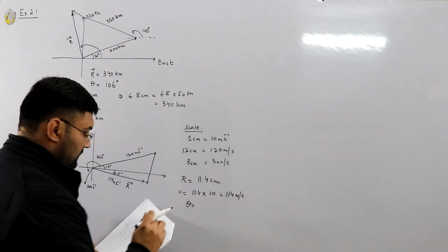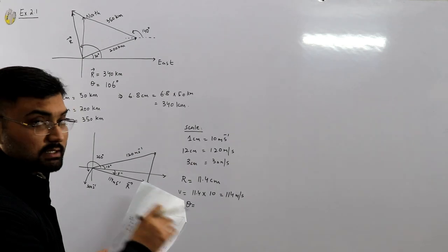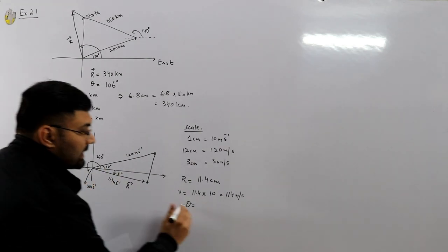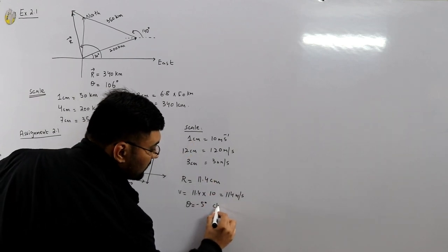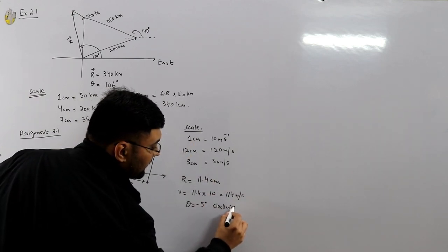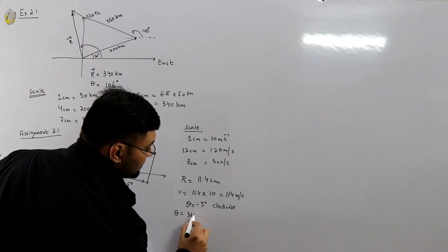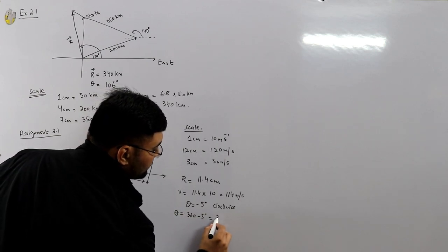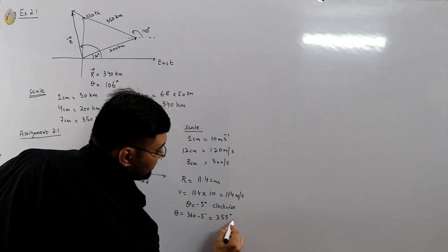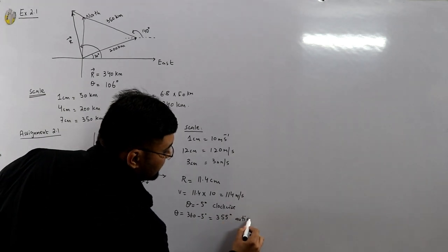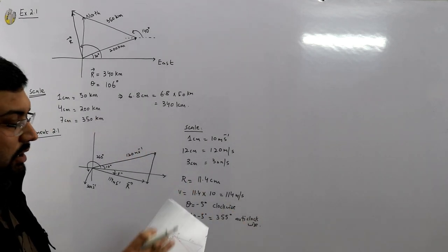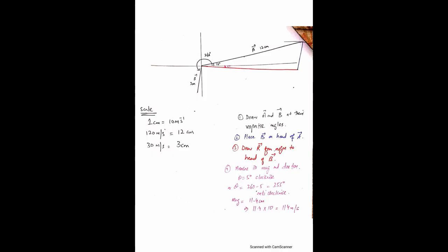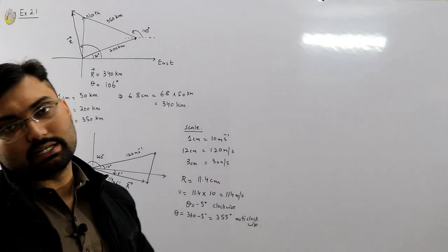Measuring theta with the nearest x-axis gives a smaller angle of 5 degrees, but since it is in the clockwise direction it is −5 degrees. You can also express this as 360 − 5 = 355 degrees in the anti-clockwise direction, which is the proper convention for the angle.